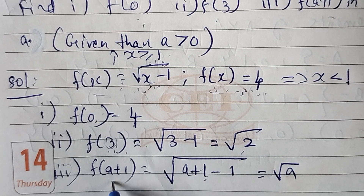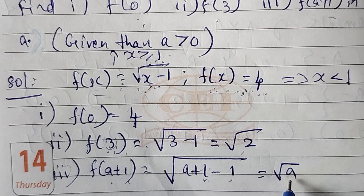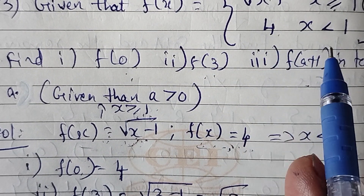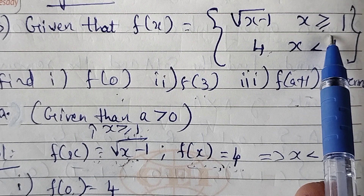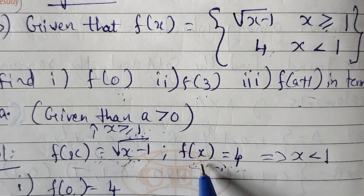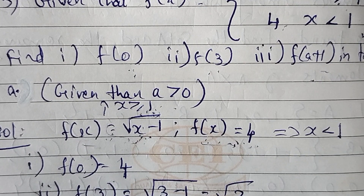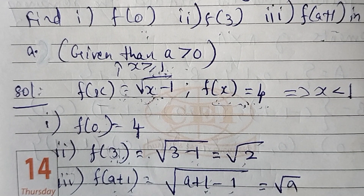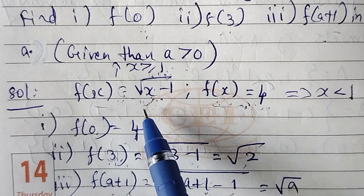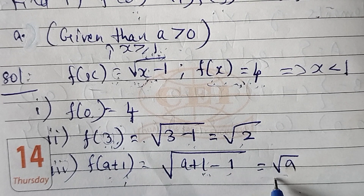For f of a plus 1: since a is greater than 0, a plus 1 is greater than or equal to 1, so we use the first condition. f of a plus 1 equals square root of a plus 1 minus 1. The plus 1 and minus 1 cancel, so f of a plus 1 equals square root of a.